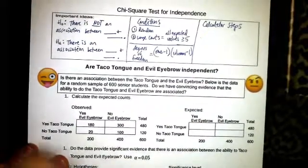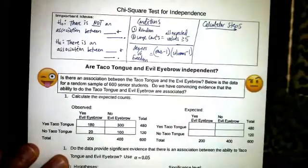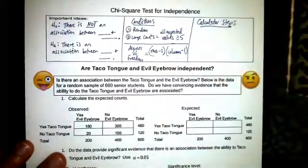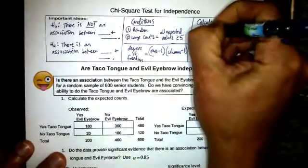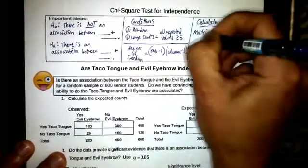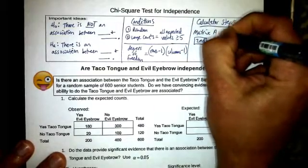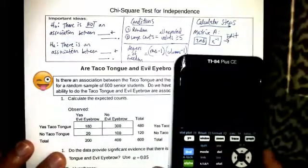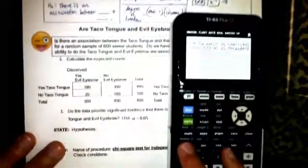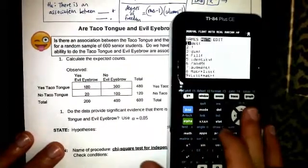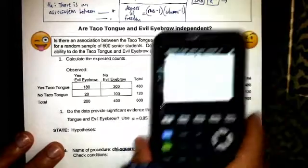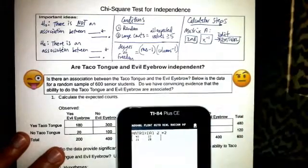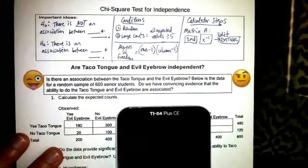Speaking of our calculator steps, we want to first input our matrix. So to get to matrix A we're going to hit second x to the negative one and over to edit. So what that'll look like is second x the negative one, over to edit, and then we want to hit enter on matrix A.